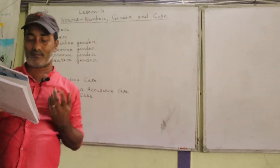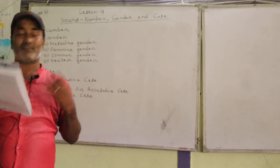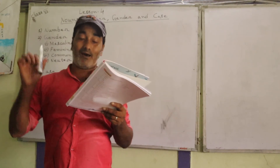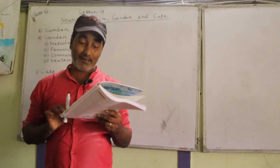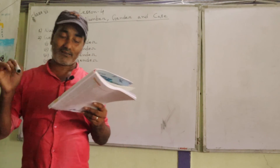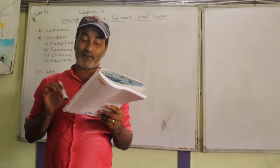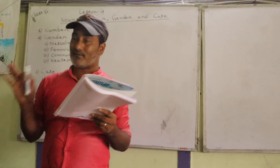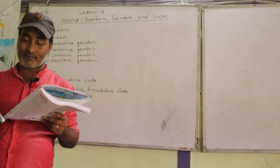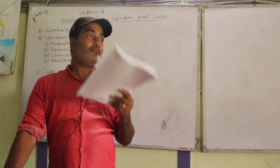Another example: 'Shulvi lost Archana's pencil.' Whose pencil did Shulvi lose? Archana's pencil. So here, 'Archana's' will be called possessive case, because it shows whose pencil it is.